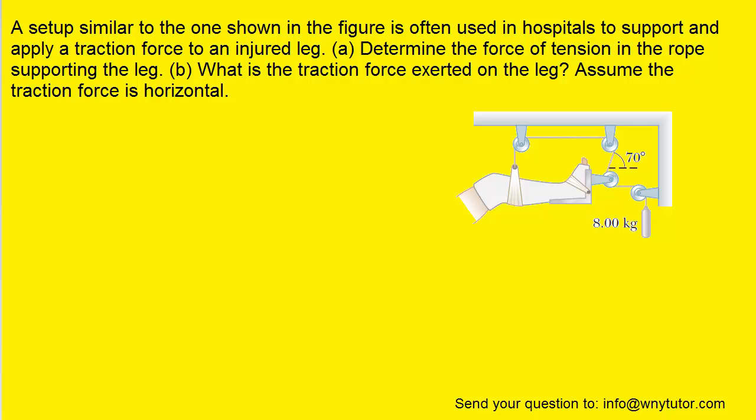For part A, in order to determine the force of tension in the rope supporting the leg, we have to realize that the tension in the rope is actually going to be the same value throughout the entire length of the rope. So even though the rope supporting the leg is placed over here in the drawing, because the tension remains constant throughout the rope, even as it twists around the pulleys...